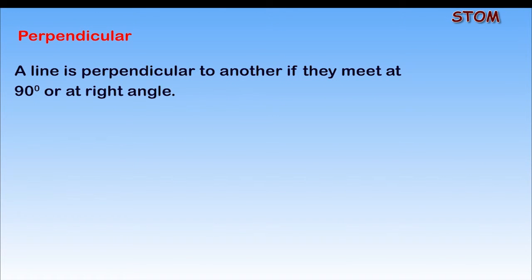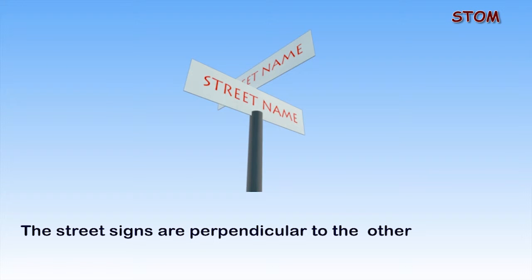Perpendicular. A line is perpendicular to another if they meet at 90 degrees or at right angle. These street signs are perpendicular to one another.